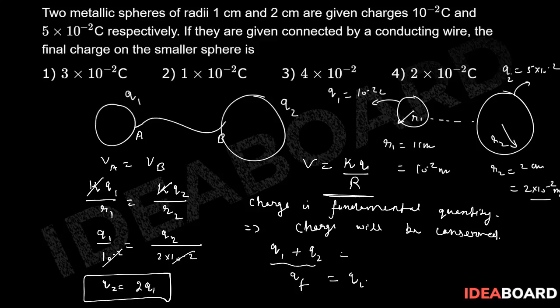Initial charges are 10 to the power minus 2 plus 5 into 10 to the power minus 2, so this will be 6 into 10 to the power minus 2 coulomb. Now we get two equations, equation number 1 and equation number 2 like this.